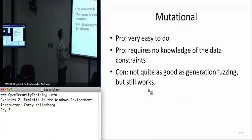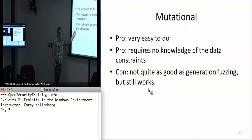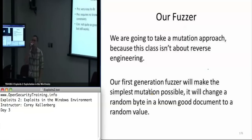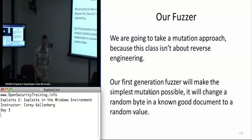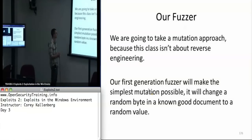Mutational fuzzing has a big advantage: it's very easy to do. You can just write a script to download a whole bunch of PDF documents or whatever document you're trying to fuzz. It doesn't generate quite as good bugs as generational fuzzing empirically, but it still works. For our purposes, we're going to use a mutational approach because it's easier — this class isn't about reverse engineering. I'll be providing you with a sample of known good CDF files and we'll be fuzzing those.